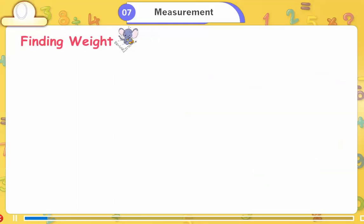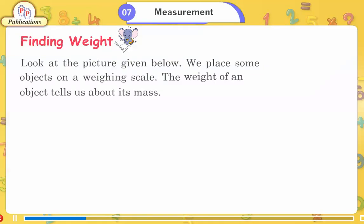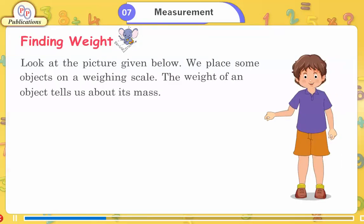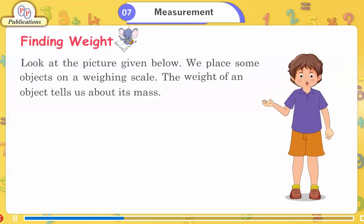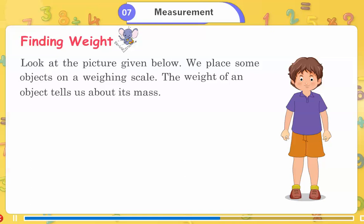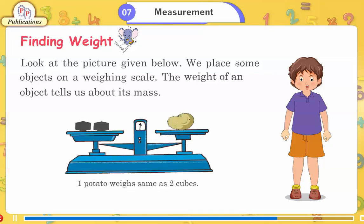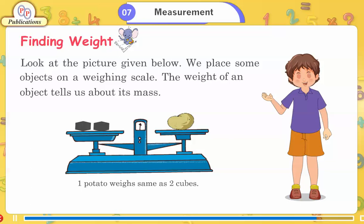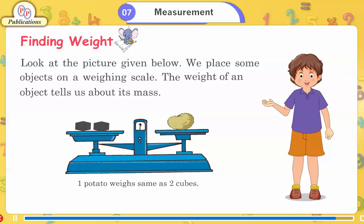Finding Weight. Look at the picture given below. We place some objects on a weighing scale. The weight of an object tells us about its mass. One potato weighs the same as two cubes.